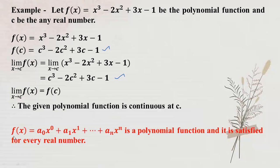So for f(x) equal to a-zero times x to the zero plus a-one times x to the one plus ... plus a-n times x to the n, it is a polynomial function. Polynomial function is certified for every real number.